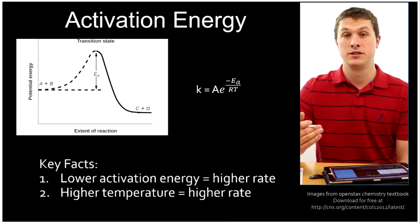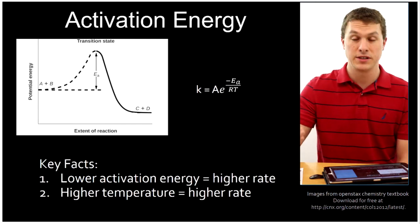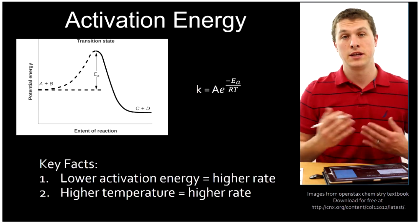First, if you have a lower activation energy, that gives you a higher rate. This should make sense because your hill is smaller, and that means getting over it is easier.